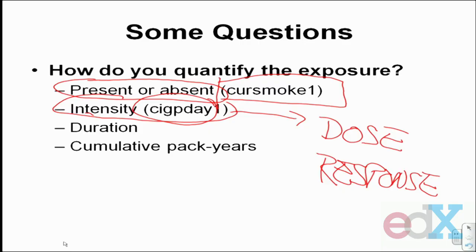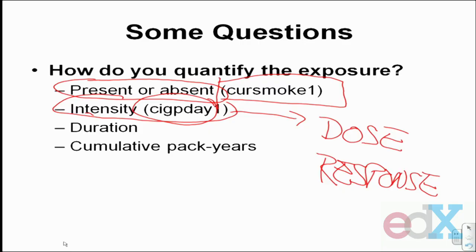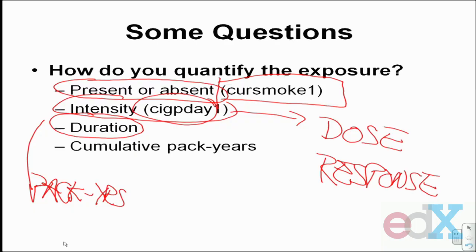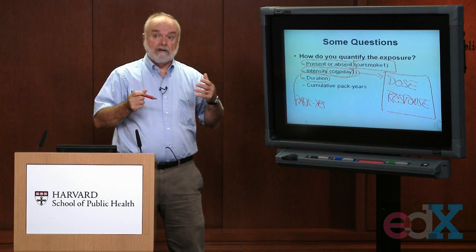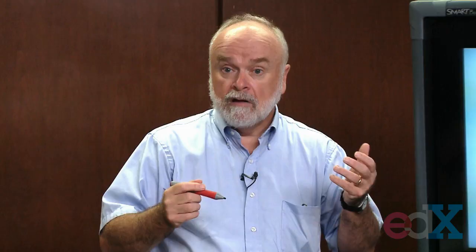The other way that smoking is typically measured is by looking at measures that reflect how long you've been smoking, in terms of something called pack years. We don't have that in detail in our Framingham data set, but when you ask a person whether they're a smoker or not, you might also ask them how long they've been smoking. That might be important in terms of a dose-response relationship — a person who's been smoking for 20 years might have a higher incidence of disease than someone smoking for just one year. So duration, like pack years, would be another meaningful measure of association.